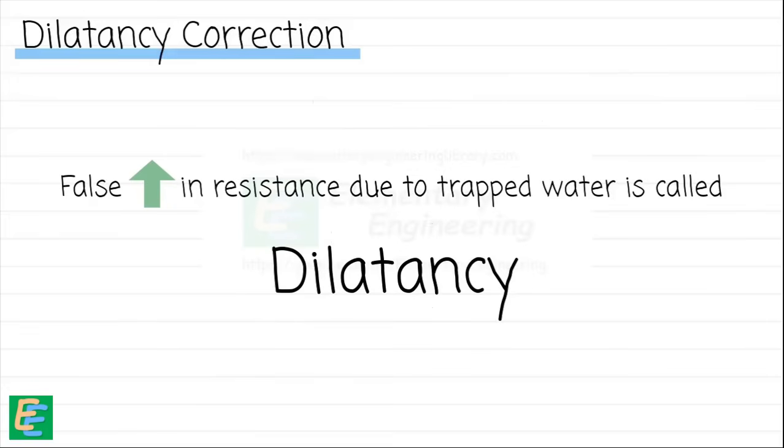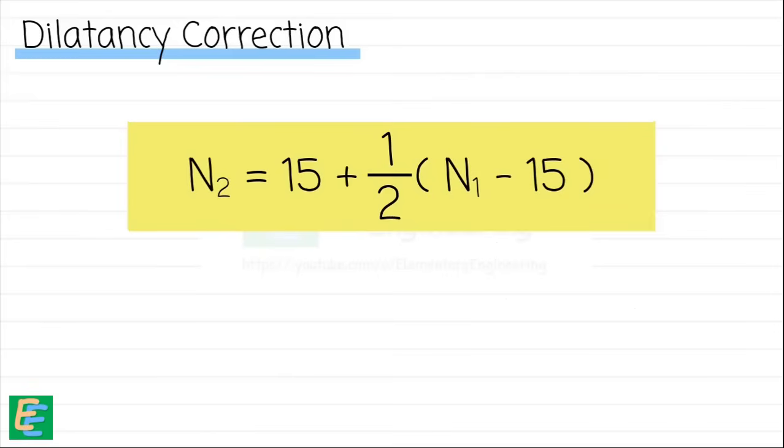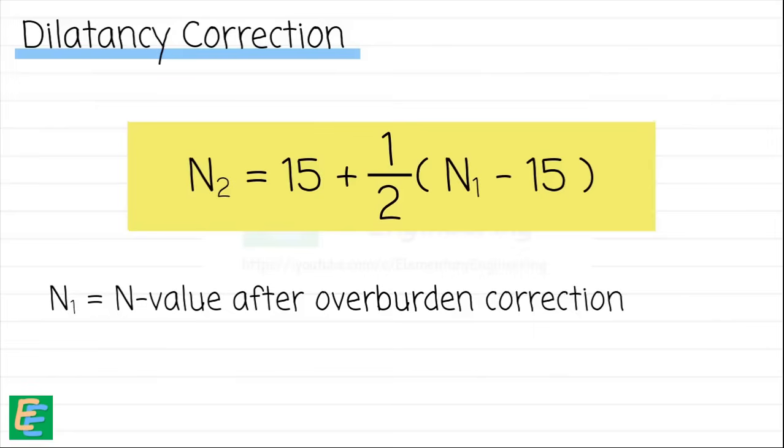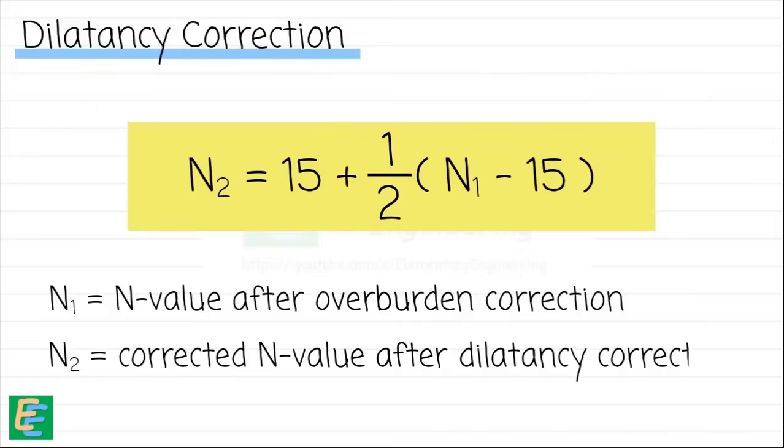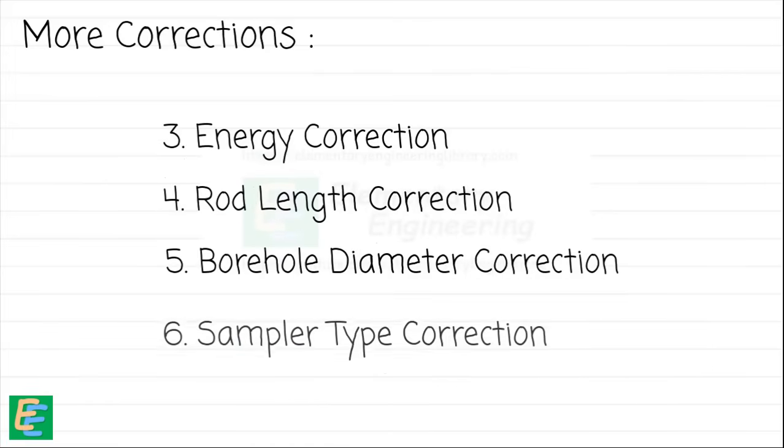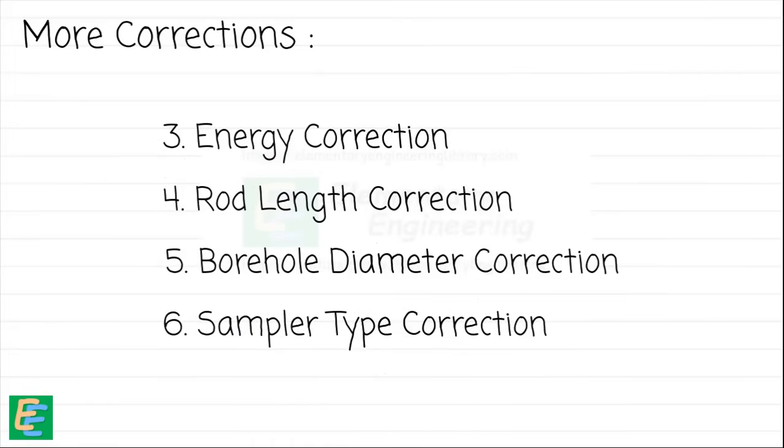To correct for this, we apply dilatancy correction to the SPT number obtained after the overburden correction. Here N1 is the SPT number after overburden correction and N2 is the corrected SPT number accounting for dilatancy. There are more corrections done to the SPT number, but let's not discuss all of them.